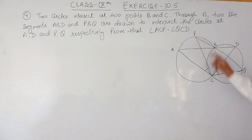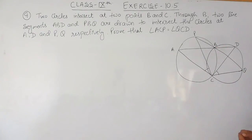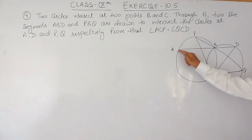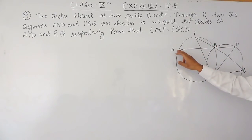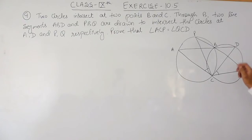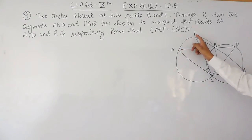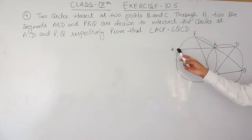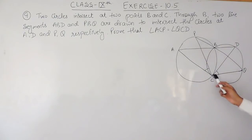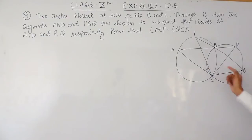These are the two circles intersecting each other at C and B. From B you are drawing two straight lines — ABD is the first one and PBQ is the second one — intersecting the two circles at A and D, and intersecting this circle at P and Q. You have to prove that angle ACP is equal to angle QCD.